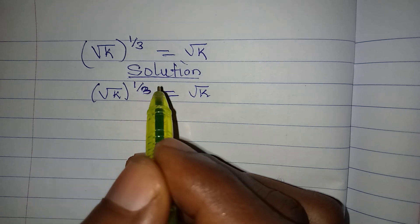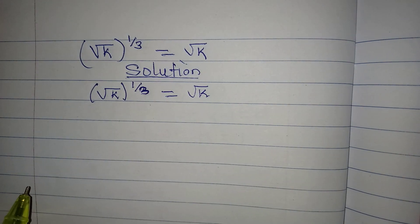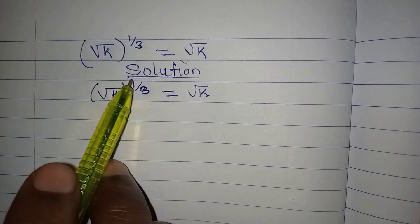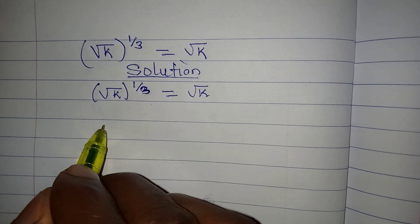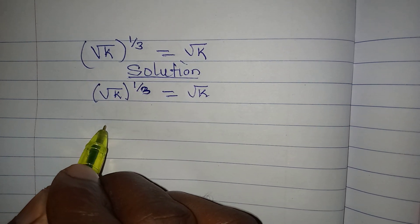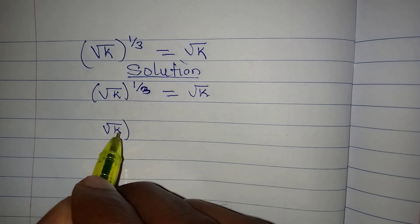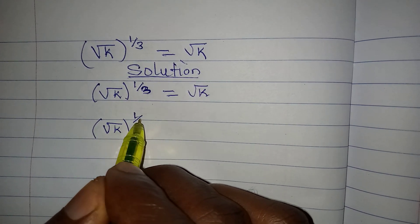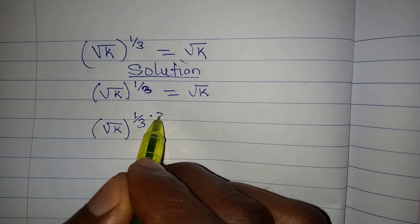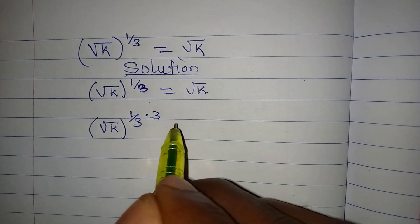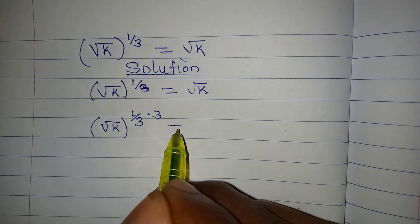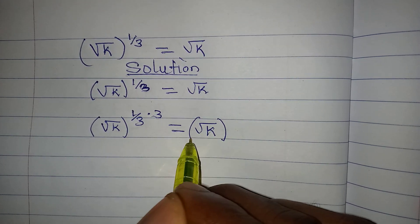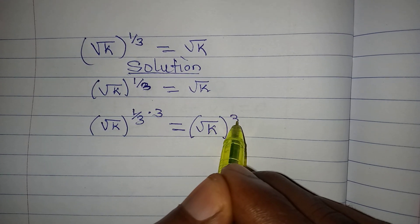The first thing we do is remove this power of 1/3. To do that, we take the square root of k to the power of 1/3, then multiply the power by 3. Now that we introduce the 3, we have to take it to the right-hand side as well.